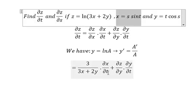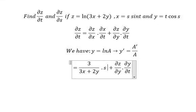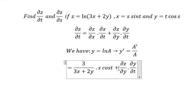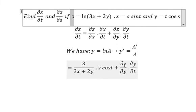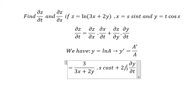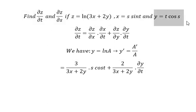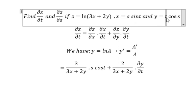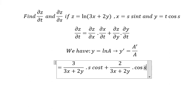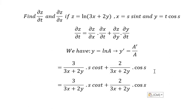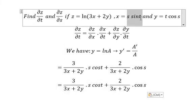For the first derivative of X with respect to T, we have cos(T). Then for the first derivative of Z with respect to Y, we have 2 over (3S + 2Y). Since Y is present, the first derivative gives only the coefficient, so we have cosh.